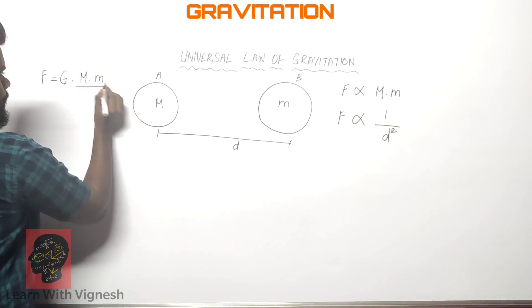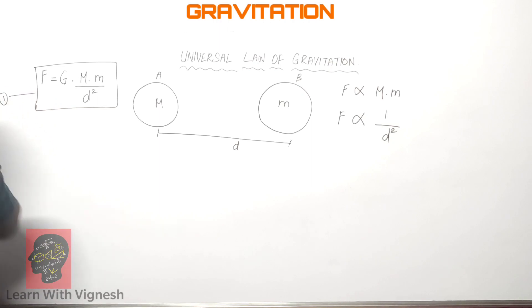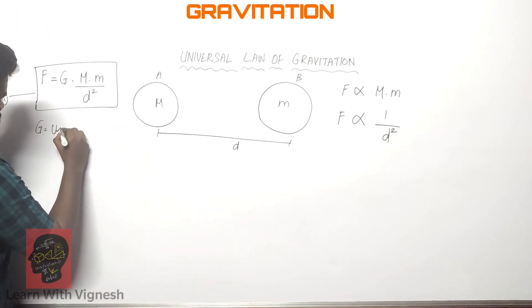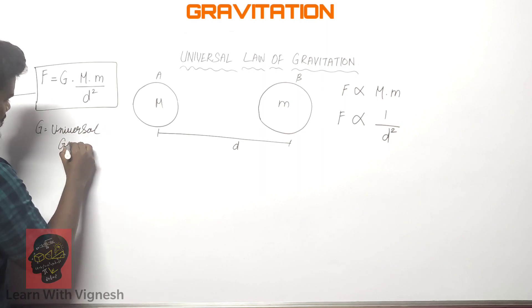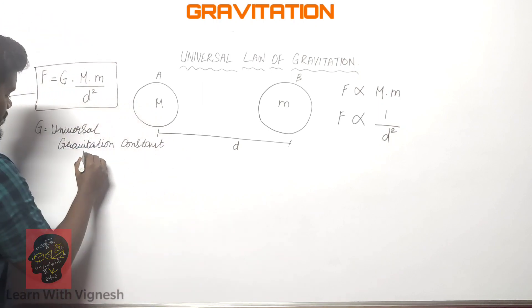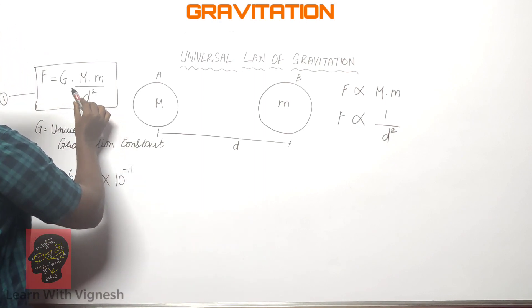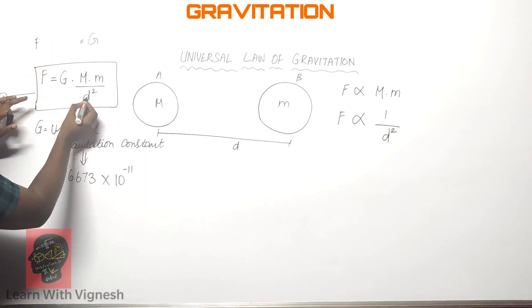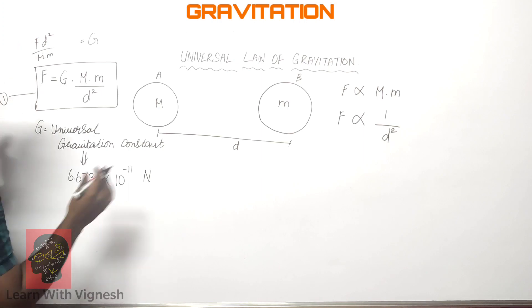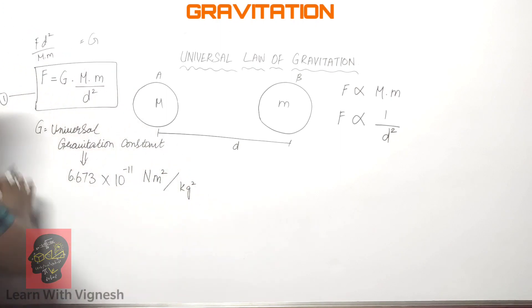So in directly proportional, we replace the proportional symbol with equal to and add a constant. We get: F = G × M × m / d². This is the universal law of gravitation. F equals G into M into m upon distance square.